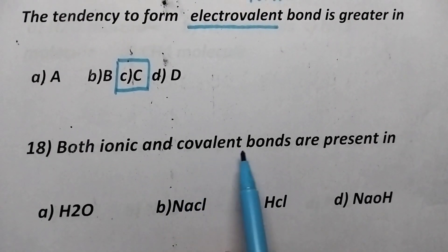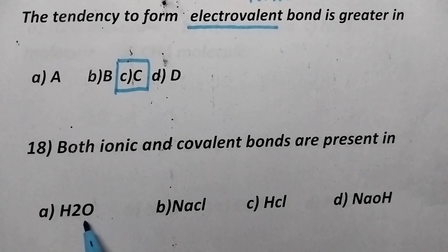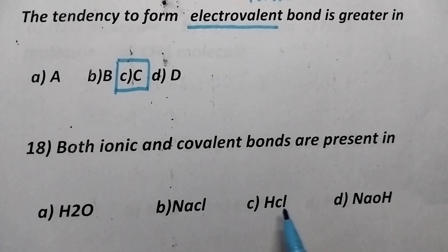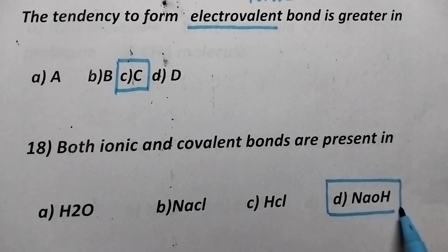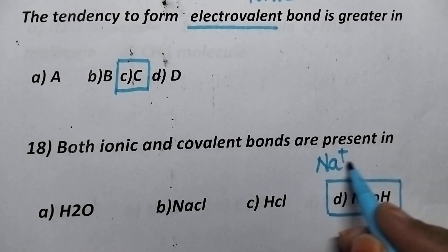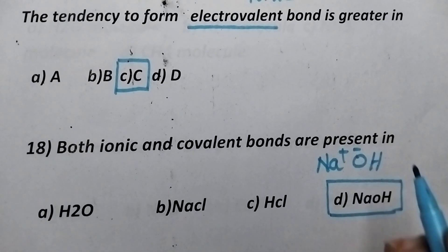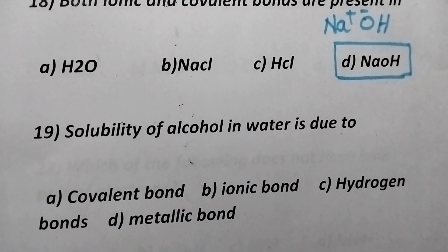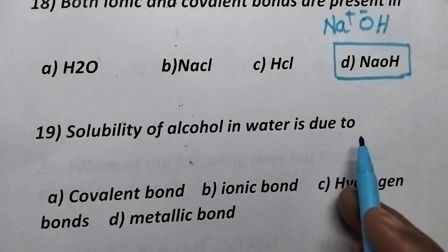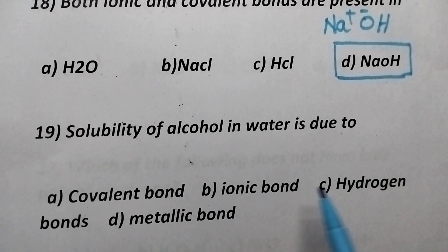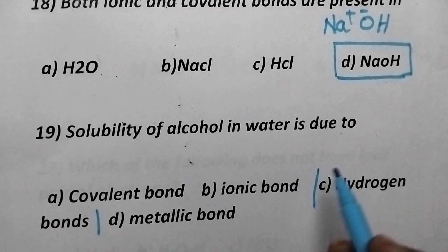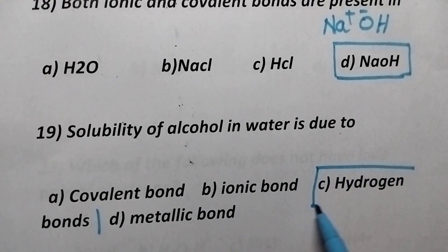Both ionic and covalent bonds are present in. Water contains only covalent bond. NaCl contains only ionic bond whereas HCl contains covalent bond. Coming to the option D, NaOH contains both covalent and ionic bond. Na plus OH minus. So, between Na and OH minus ionic bond is present. Between oxygen and hydrogen covalent bond is present. Solubility of alcohol in water is due to the formation of hydrogen bonds. So, here hydrogen bonding is the right option.